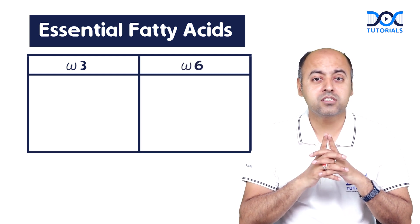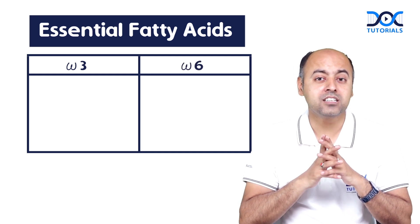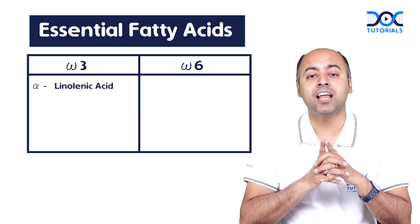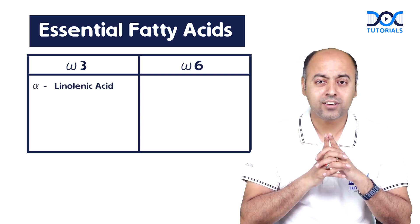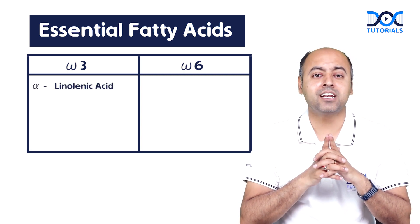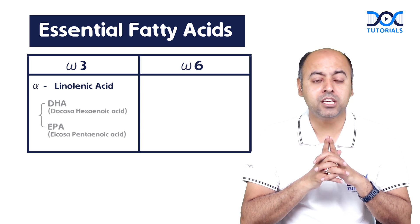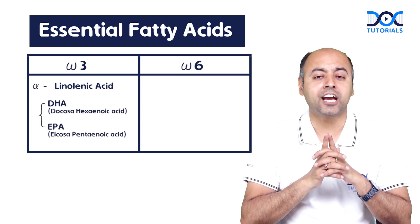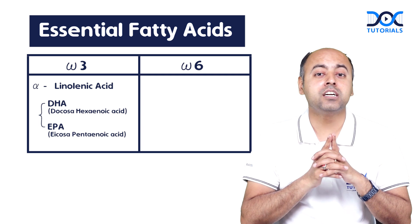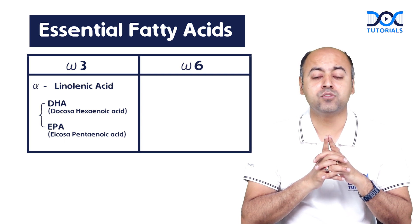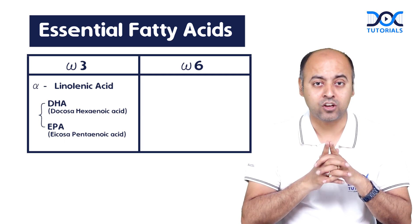The first essential fatty acid in the omega 3 series is the alpha linolenic acid. The alpha linolenic acid can either be converted into the EPA, which is the icosapentaenoic acid, or the DHA, which is the docosahexaenoic acid.